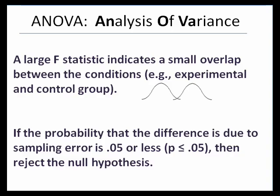In summary, a large F-statistic indicates a small overlap between our conditions — for example, an experimental and control group. If the probability that the difference is due to sampling error is 0.05 or less — that's our alpha level — then we'll reject the null hypothesis. Our type 1 error is also 0.05: the probability that we'll incorrectly reject the null hypothesis.